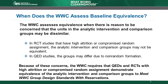Recall from the group designs and attrition modules, Modules 1 and 2, that normally random assignment gives us confidence that the groups are similar, or equivalent, on observable and unobservable characteristics. But if the RCT has high attrition or compromised random assignment, the intervention and comparison groups used in the analysis may not be equivalent. For QEDs, the groups may differ because the study did not form them randomly.